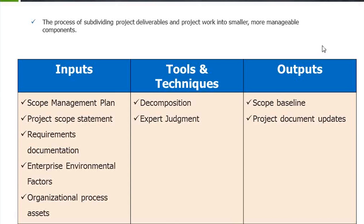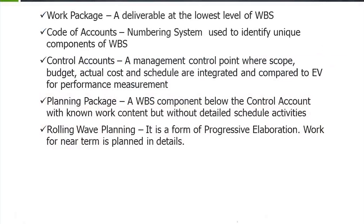The work package is the lowest level. We understood terms like code of accounts, which is a numbering system used to identify unique components of the WBS. Control accounts are management control points where scope, budget, actual cost, and schedule are integrated and compared for performance measurement. The planning package is a WBS component below the control account with known work content but without detailed schedule activities.